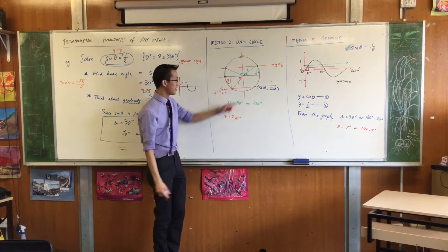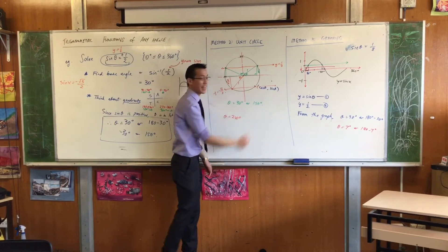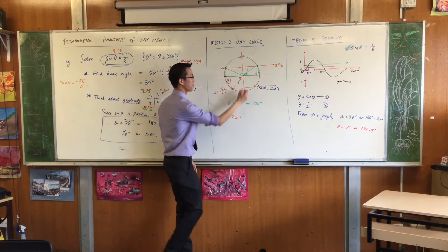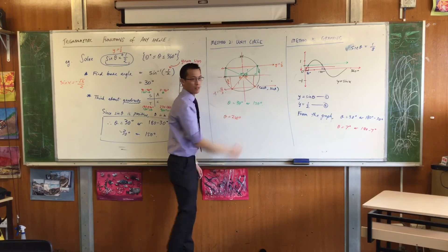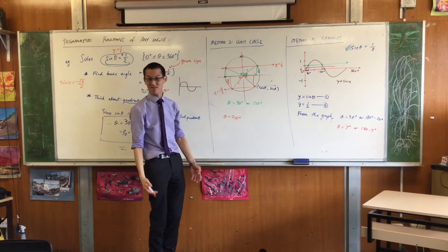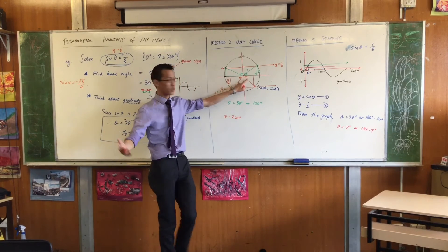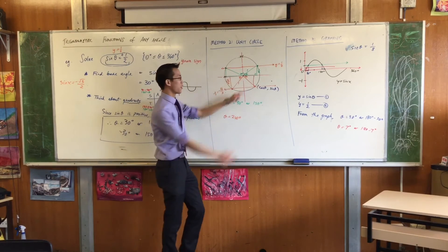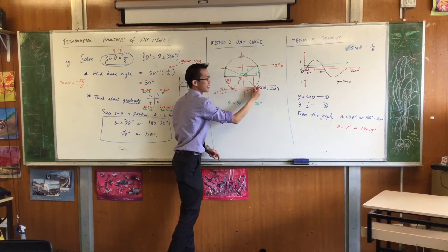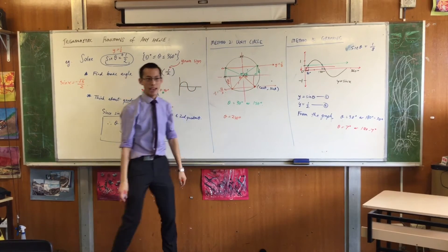But look, wait, there's another solution. There he is, that guy. How do I get to him? Well, the unit circle is symmetrical, isn't it? So this theta, which you told me was 60 degrees over here, I think it's still 60 degrees over here.